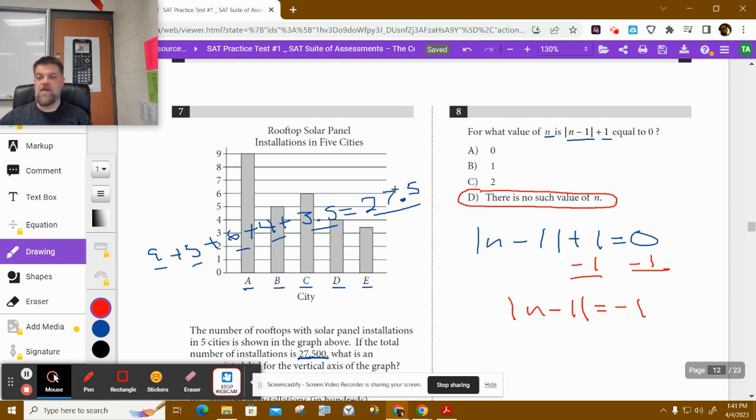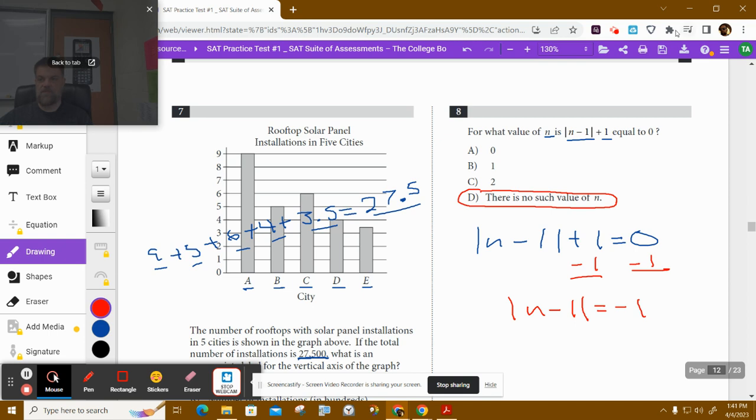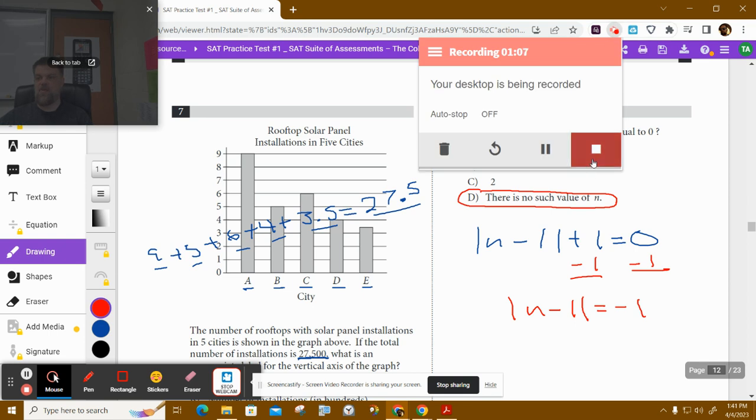I bet you some of you thought, oh, it's 2, it's something. It's d. 2 minus 1 is 1 plus 1 is 2. Try to do problem number...